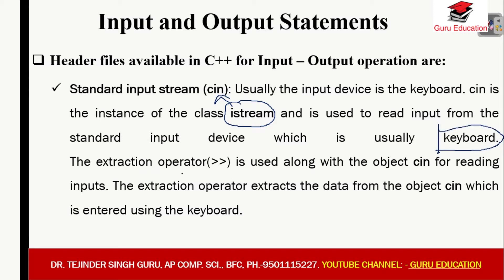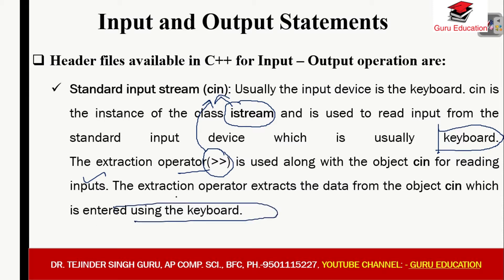The extraction operator is used with cin. The cin object is used along with the extraction operator for reading input. The extraction operator extracts the data from the cin object, which is entered using the keyboard. When we take input, we want to store it directly into a variable, so we use the extraction operator.